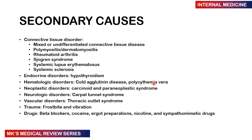Secondary causes are mostly connective tissue disorders: mixed or undifferentiated connective tissue disease, polymyositis and dermatomyositis, rheumatoid arthritis, Sjögren's syndrome, systemic lupus erythematosus, and systemic sclerosis. You may also have endocrine disorders like hypothyroidism, hematological disorders like cold agglutinin disease and polycythemia vera, neoplastic disorders like carcinoid and paraneoplastic syndromes, neurological disorders, vascular disorders like thoracic outlet syndrome, trauma including frostbite and vibration, and drugs such as beta blockers, cocaine, ergot preparations, nicotine, and sympathomimetic drugs.